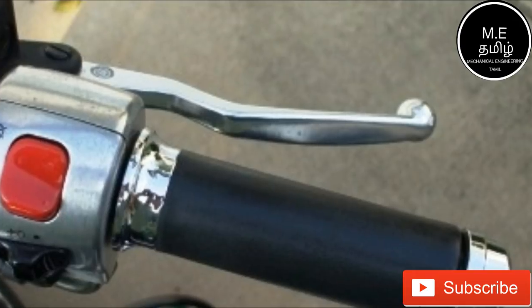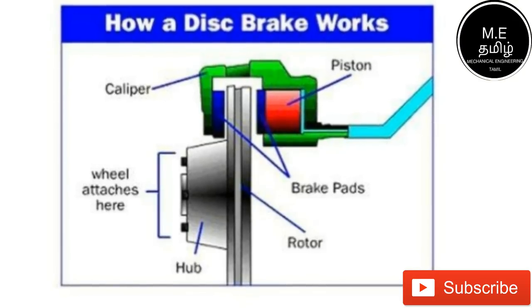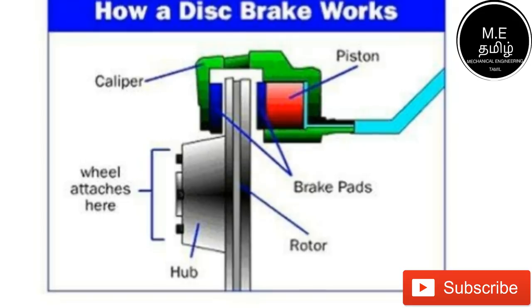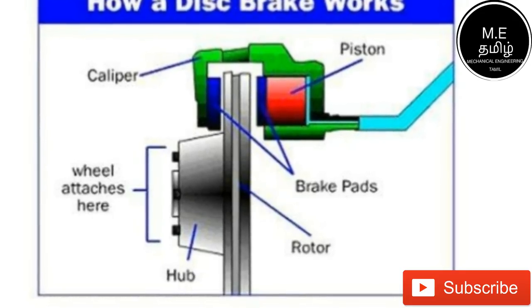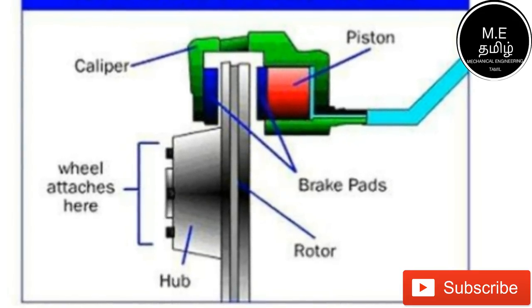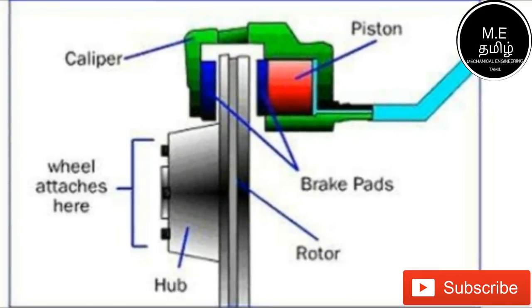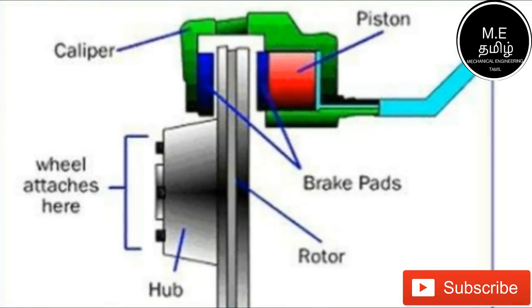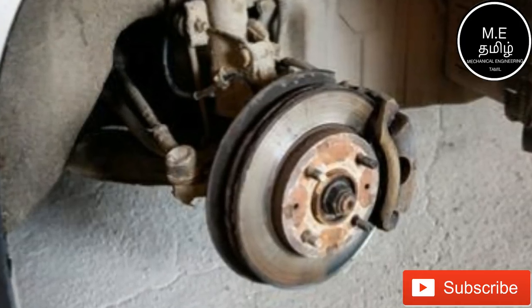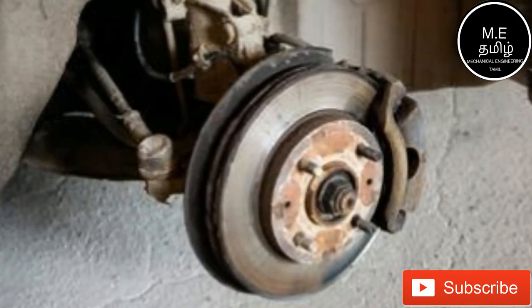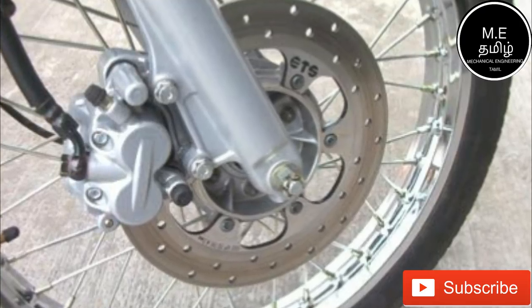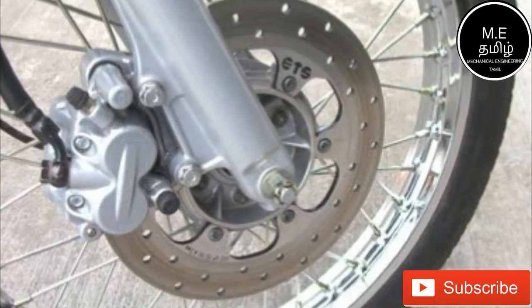If you press the brake, the caliper presses on the rotor on the car and stops the wheel. Now you can see the disc brake on the wheel.